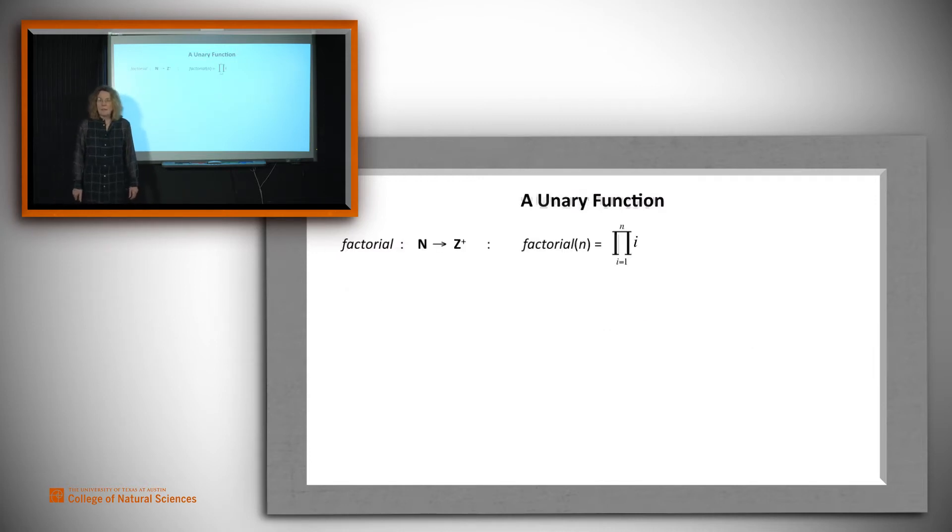Let's look at some examples. Here's a simple unary function. Factorial maps from the natural numbers to the positive integers, and factorial of some number n is just the product of the positive integers from 1 to n. So for example, factorial of 4, often written 4 factorial, is 1, 2, 3, 4 multiplied together to give you 24. Just to make it clear, the boundary case by definition, 0 factorial is 1. So we can map from the natural numbers that include 0 to the positive integers using this definition.